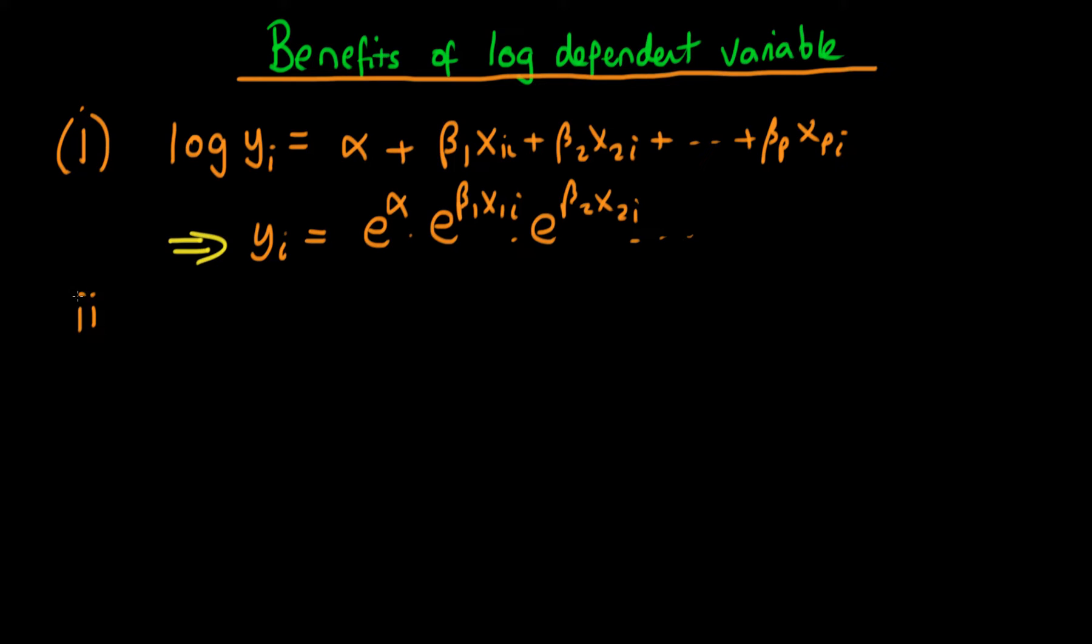Another benefit is if I take the log of the dependent variable and I also take the log of the independent variables. So I have a model which looks something like this. Log yi equals alpha plus beta 1 times log x1i plus beta 2 times log x2i all the way through to beta p times log xpi.